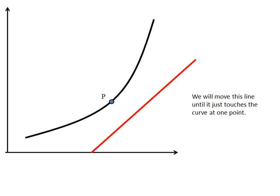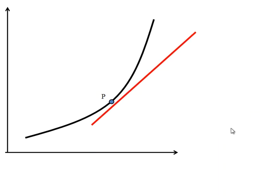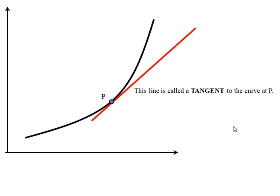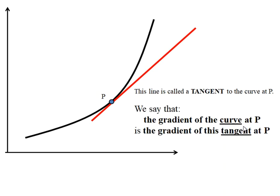Now, what do we mean by the gradient of a curve, or the steepness of a curve? I'm going to move this line until it just touches the curve at P. This line is called a tangent to the curve at P. We say that the gradient of the curve at P is the gradient of the tangent at P.